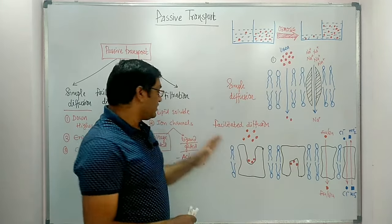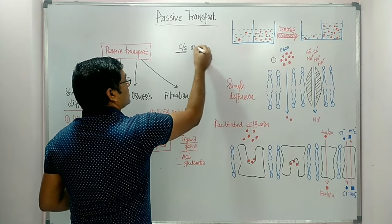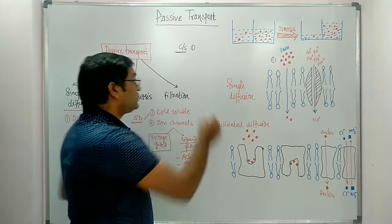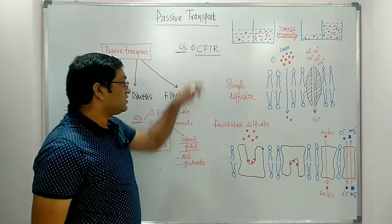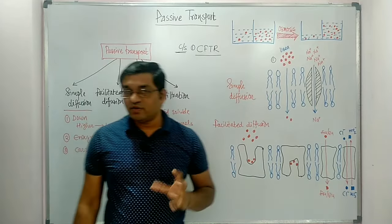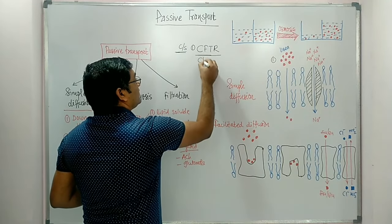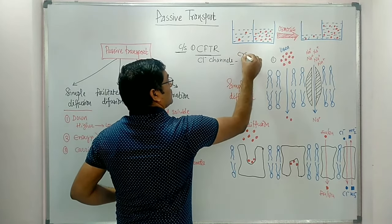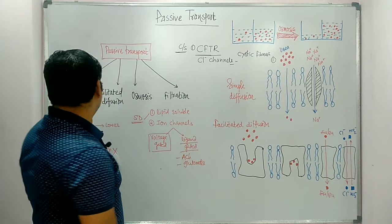The Clinical Application related to Simple Diffusion: The first is Chloride Channels. There is mutation in the CFTR — Cystic Fibrosis Transmembrane Conductance Regulator gene. Mutation in this gene causes a defect in the Chloride Channels, which causes Cystic Fibrosis. This is one clinical significance of Simple Diffusion.